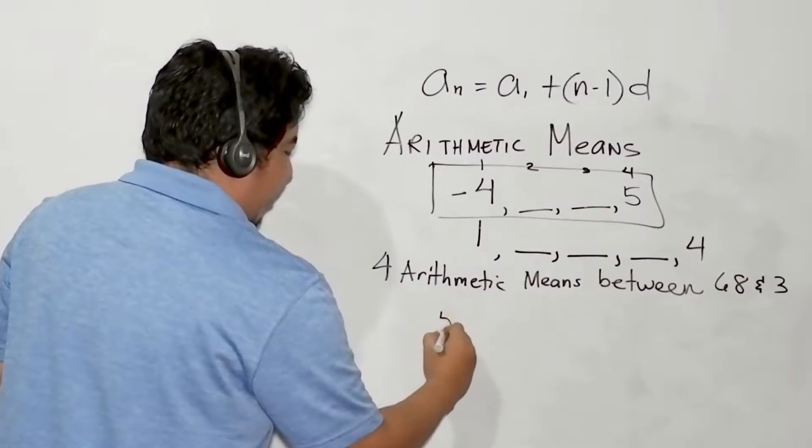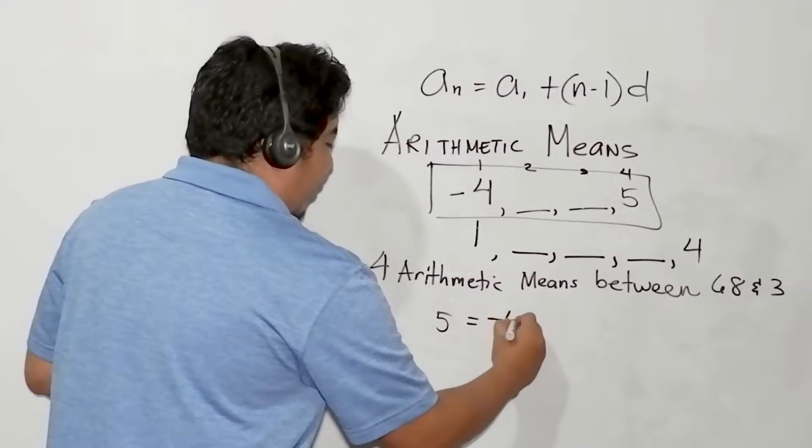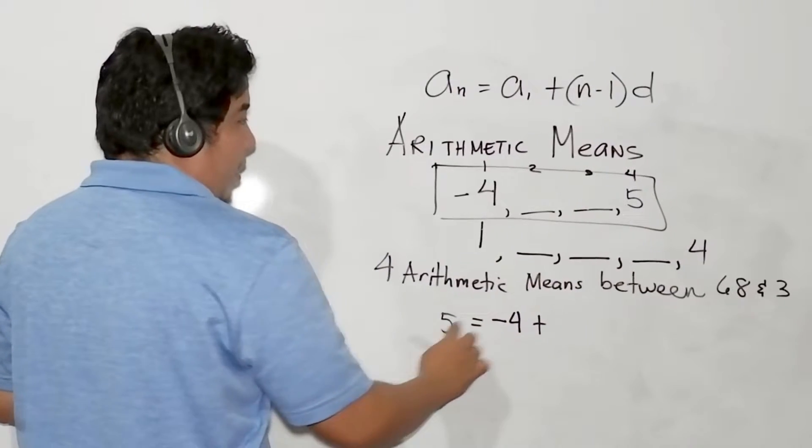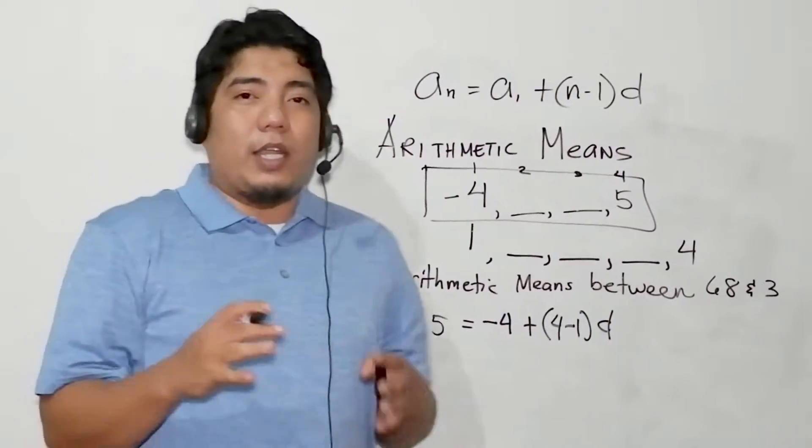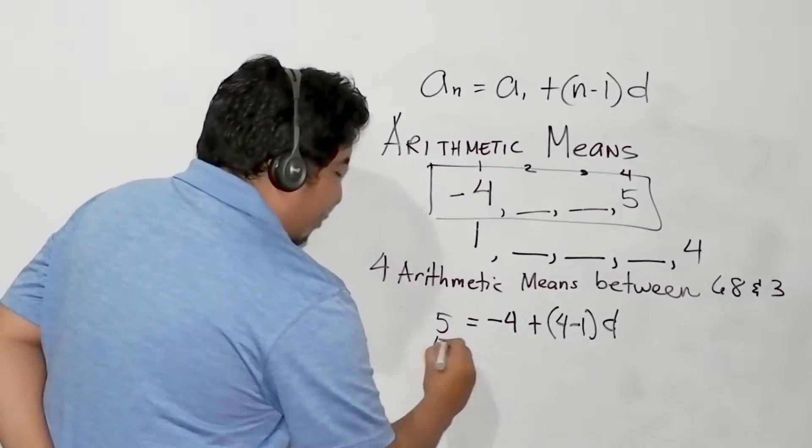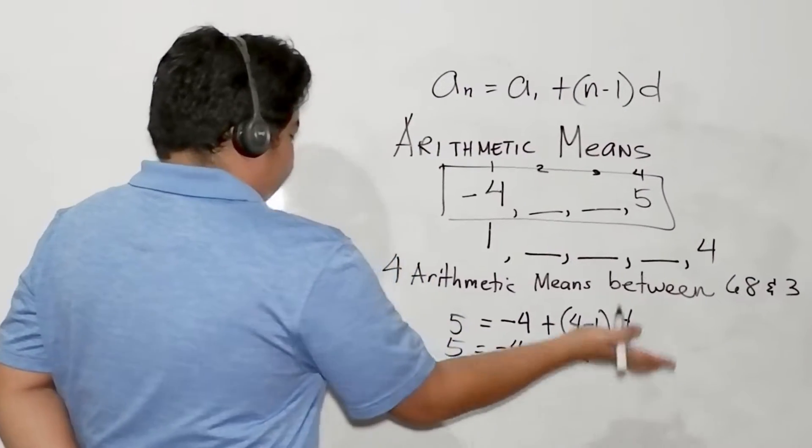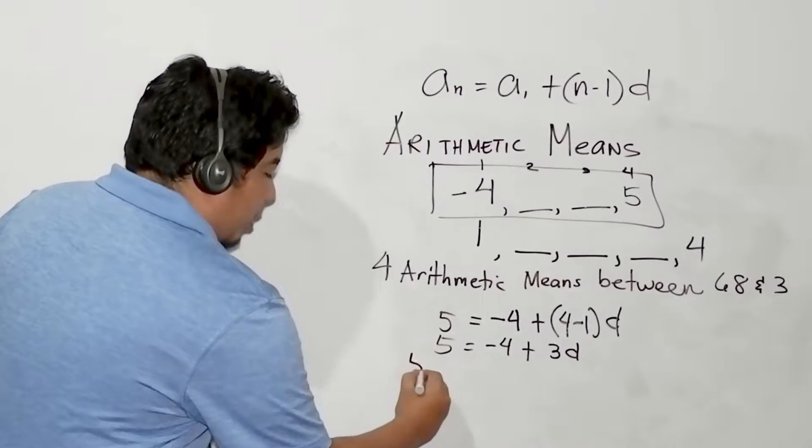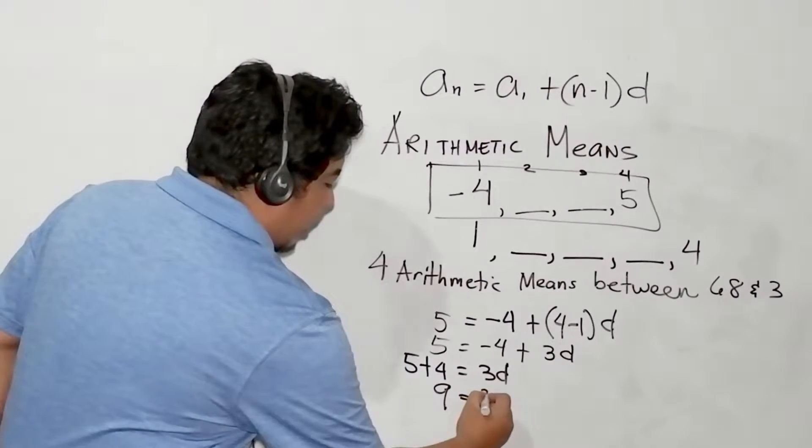A sub 4, which is positive 5, is equal to our first term, which is -4, plus n minus 1. We know our n, the position of 5 here is the fourth term. So we can just write 4 minus 1 times our difference. We have 5 equals -4 plus 4 minus 1, that is 3d. We combine like terms, giving us 5 plus 4 equals 3d.